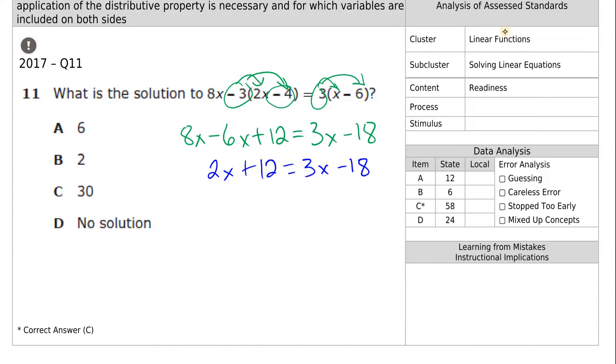A mistake that students commonly make is they try and do plus 6x plus 6x because they're used to moving things. These two variables are on the same side of the equal sign, so we just combine like terms. 8 minus 6x is 2x plus 12 equals 3x minus 18. We have variables on both sides. We need to get all the variables on the same side, minus 2x, minus 2x.